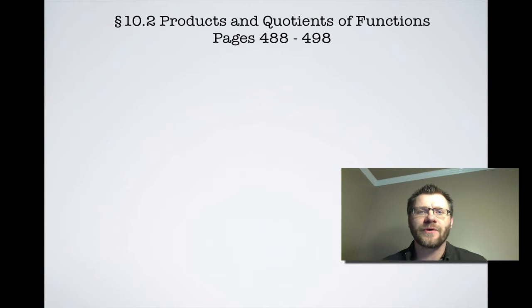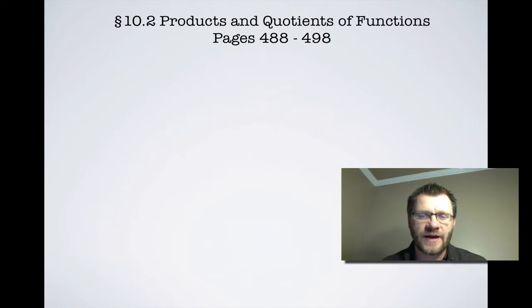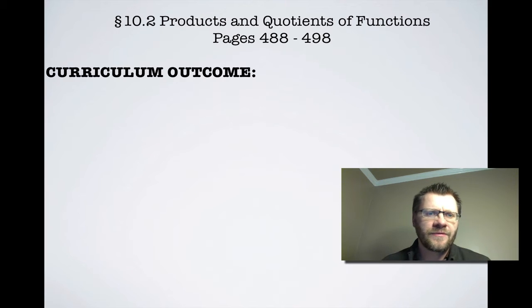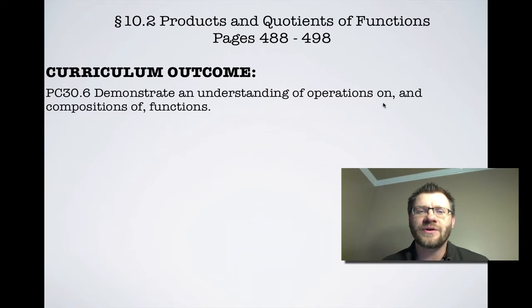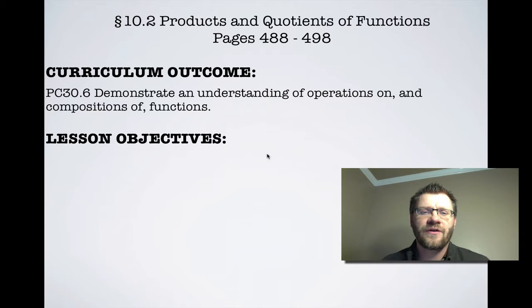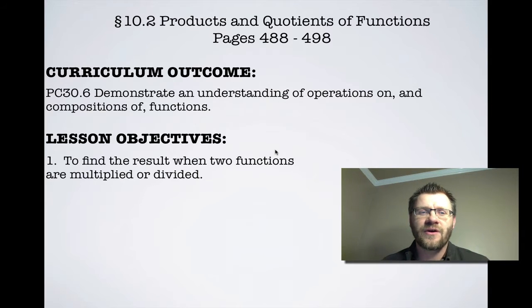Today's topic is 10.2 Products and Quotients of Functions, found on pages 488 to 498 in your text. Your curriculum outcome is to demonstrate an understanding of operations on and compositions of functions. Our first lesson objective is to find the result when two functions are multiplied or divided.